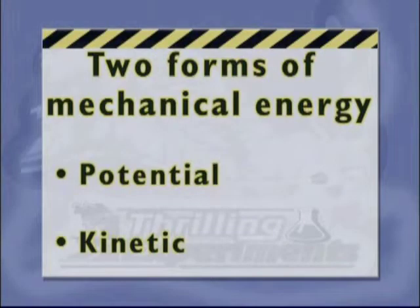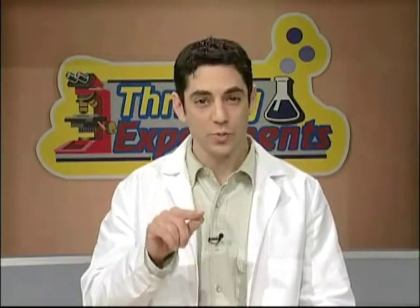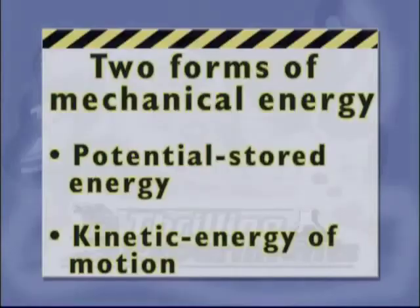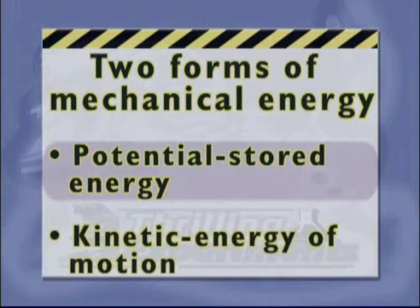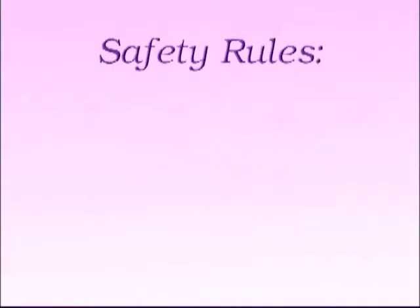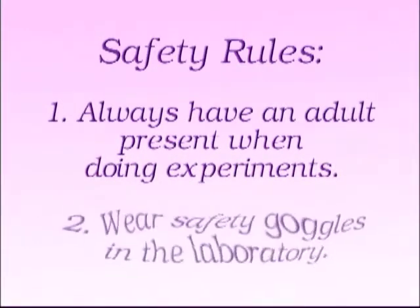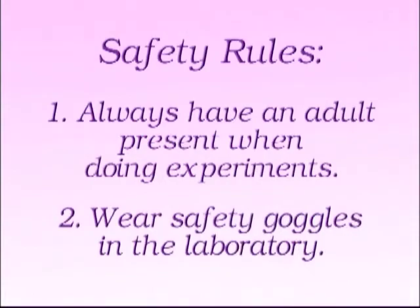Today, we're going to be focusing on two forms of mechanical energy: potential and kinetic. Potential energy is the energy stored within an object that is not in motion, but has the ability to be. Potential energy is converted into kinetic energy when the object begins to move or work. Always have an adult present when doing experiments, and always have your safety goggles available at all times when you're in the laboratory.